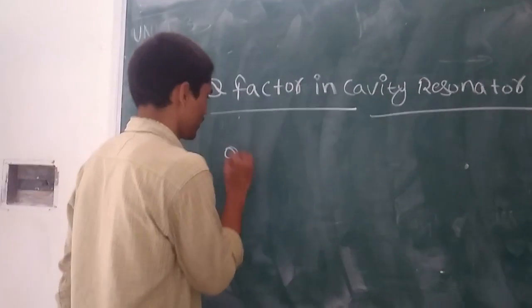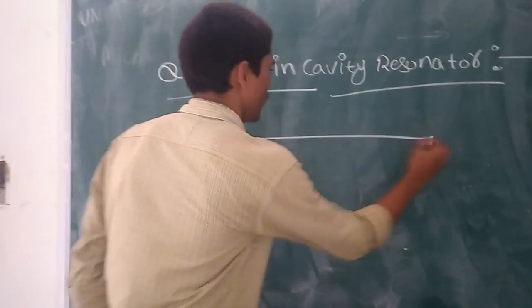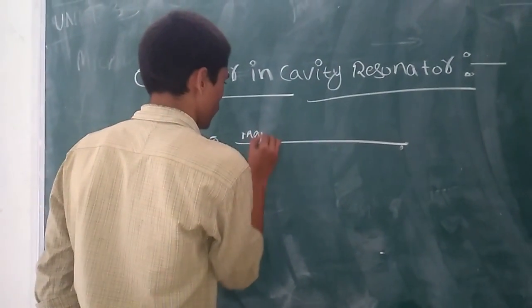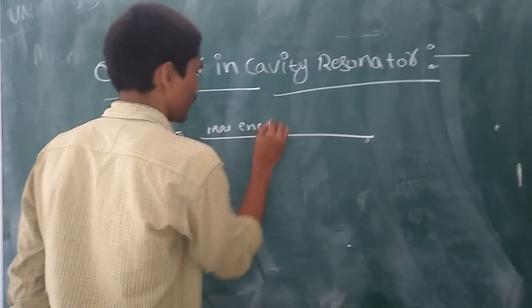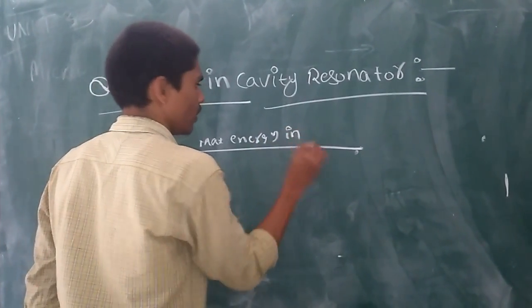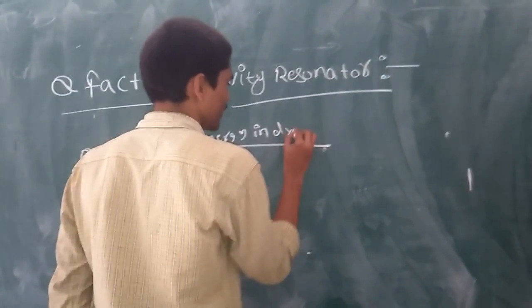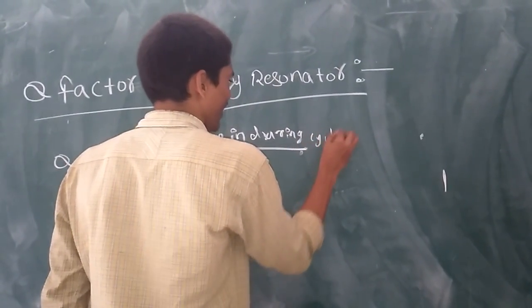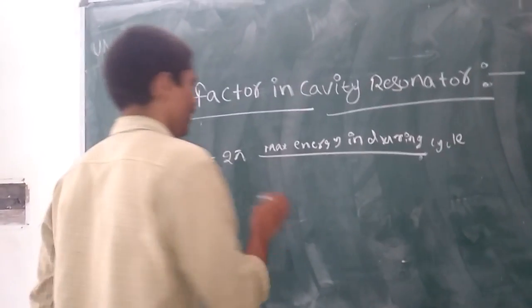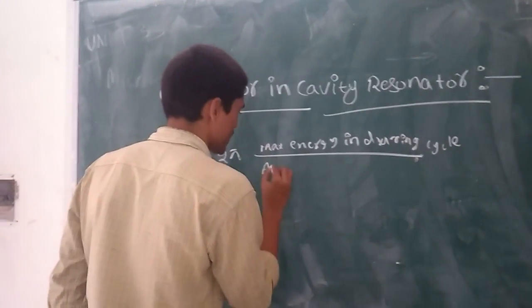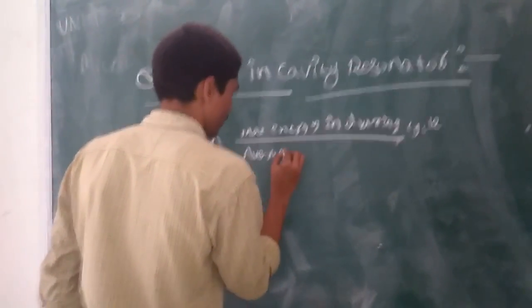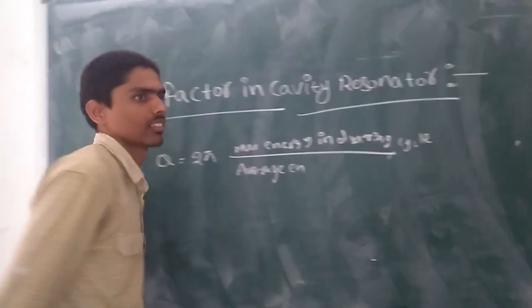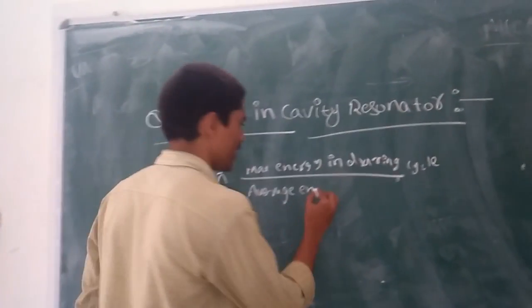Q equals to 2 pi into maximum energy stored during cycle, divided by average energy.